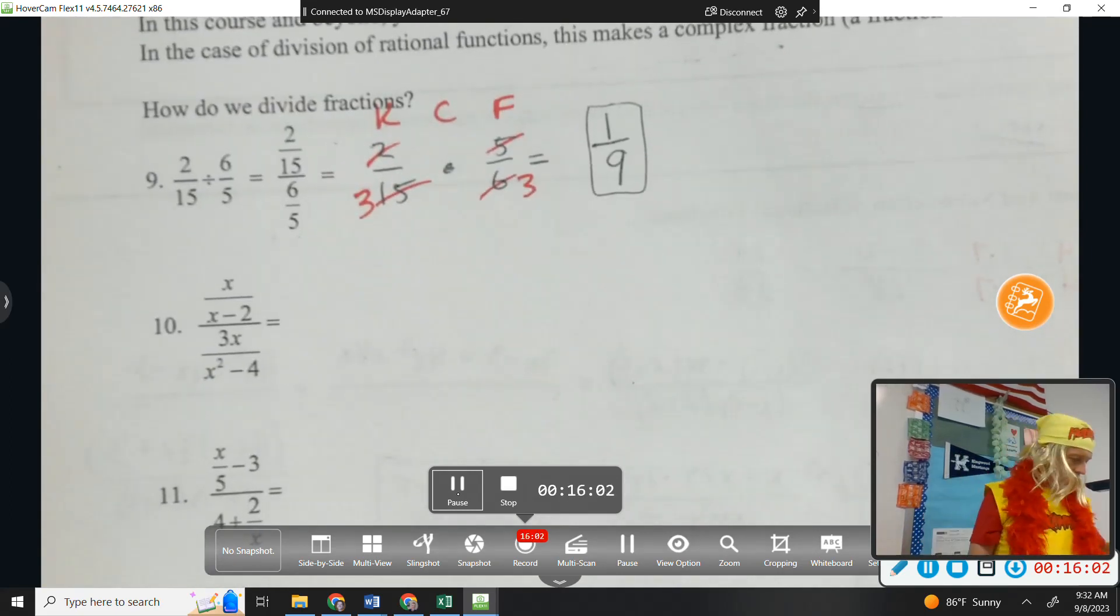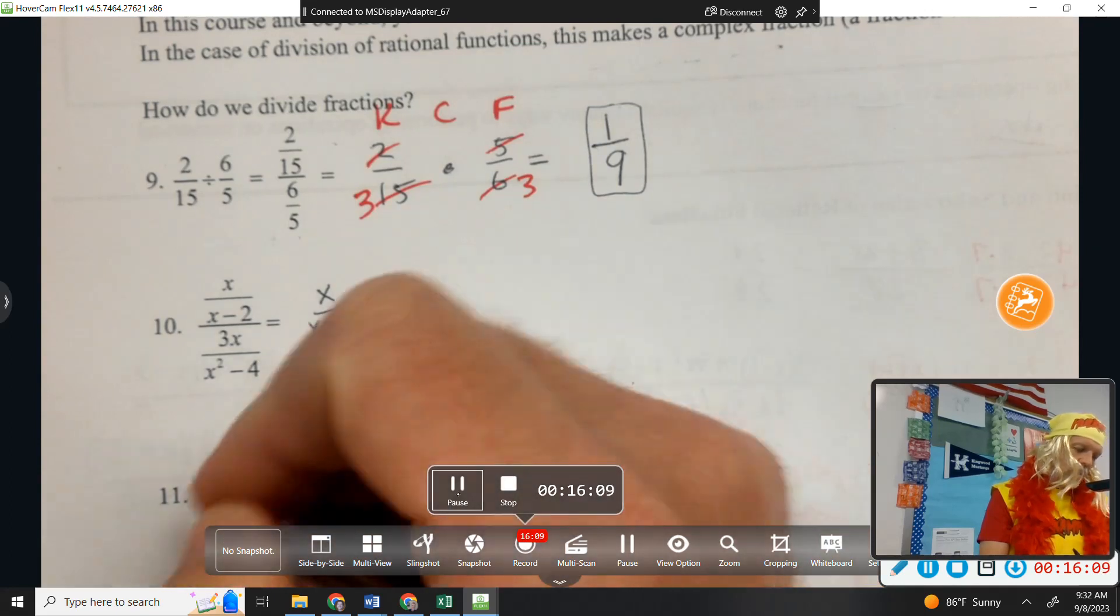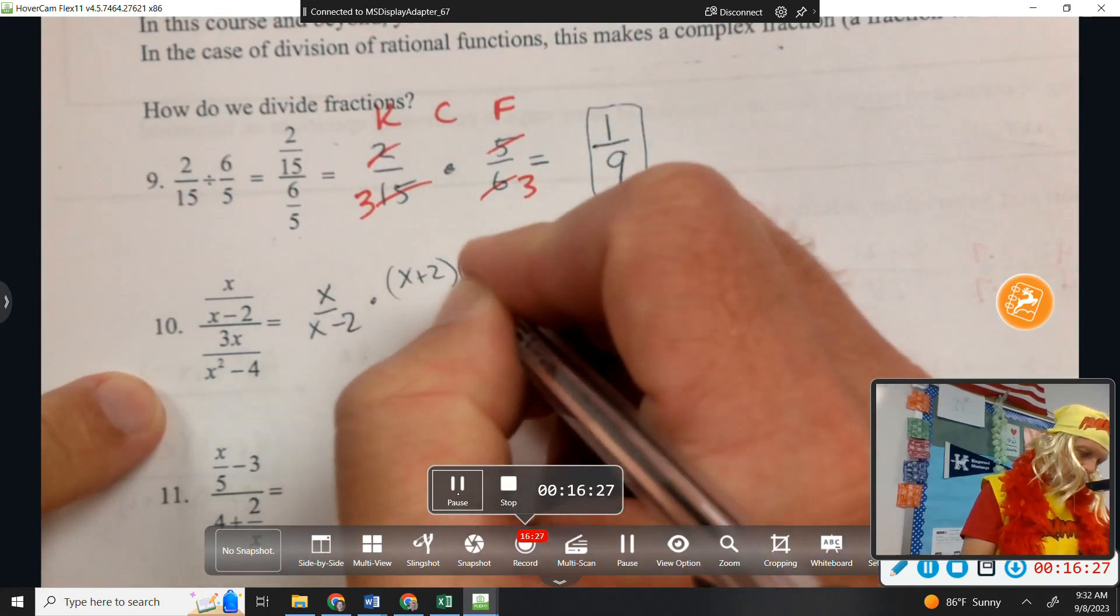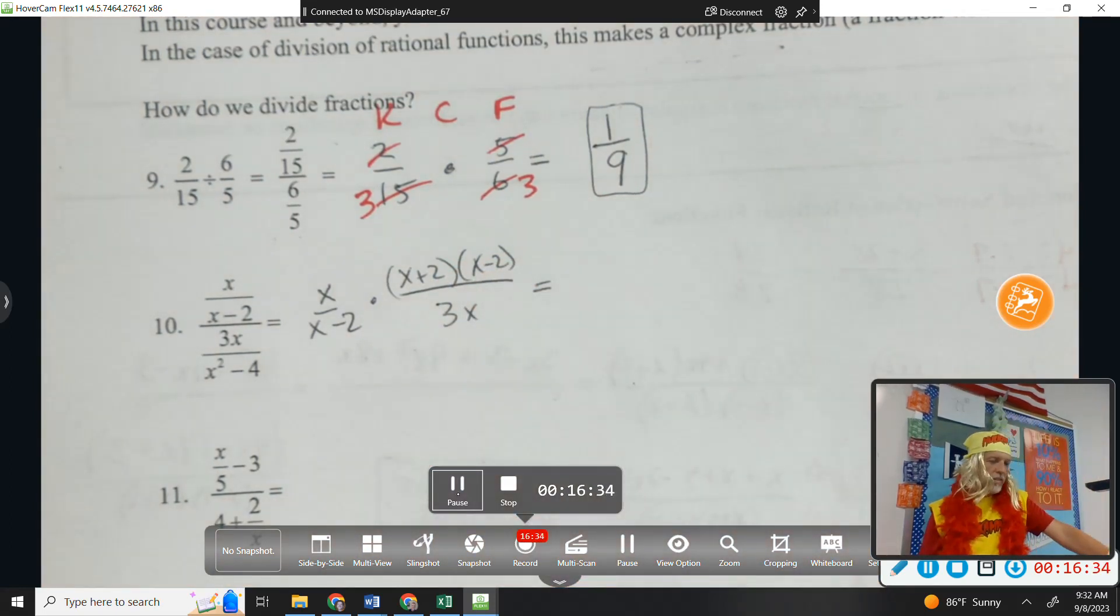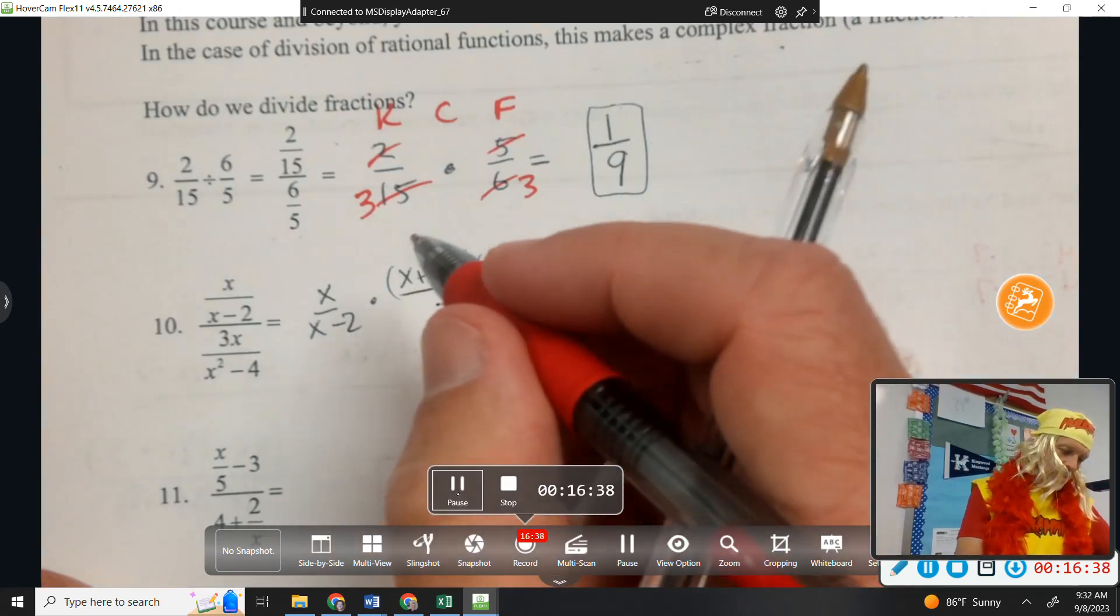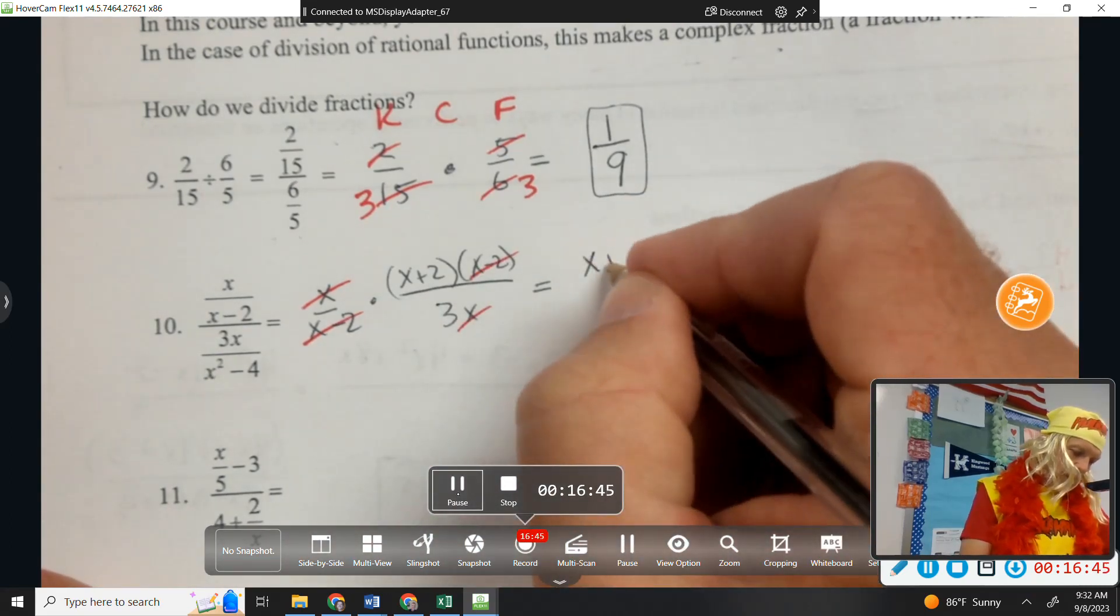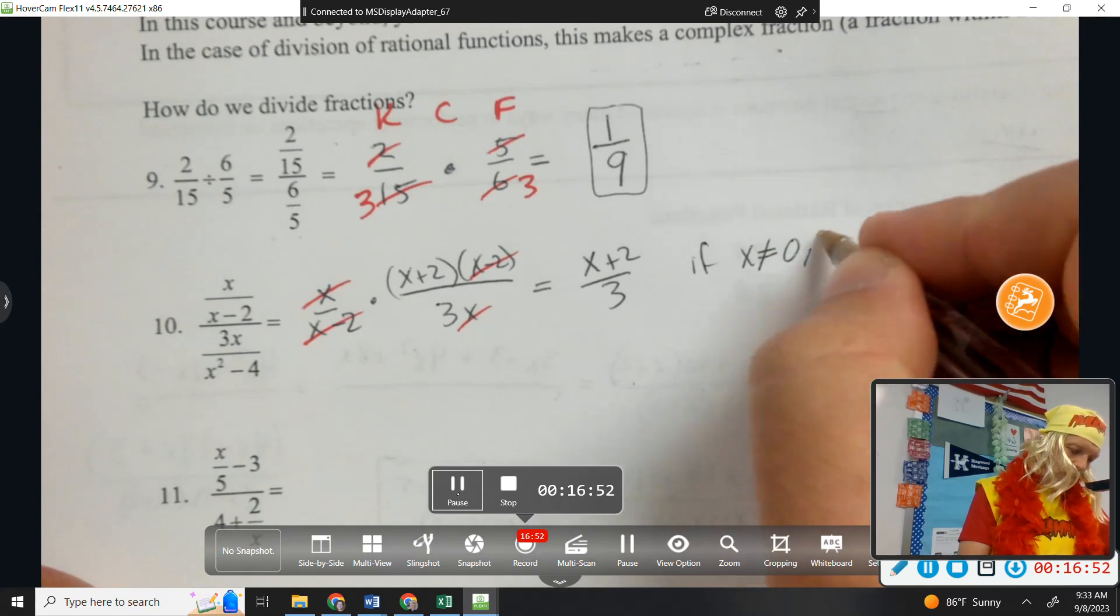Number 10. Let's see. That looks terrible as it is, but we'll keep it, change it, flip it. Ooh, can I do two things at once? What else would I like to do in addition to flipping it? Factor it. Factor it. So I'm going to do two things at once. I'm going to flip the bottom and factor it. And then look for stuff to cancel. So the x's will cancel. The x minus 2's will cancel. And I'm left with x plus 2 over 3. But I need to say x can't be 0, x can't be 2 because I canceled those factors.